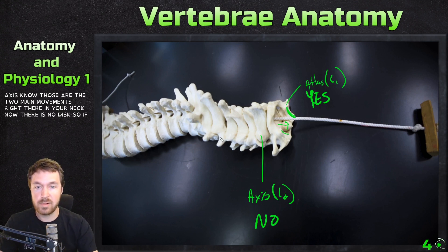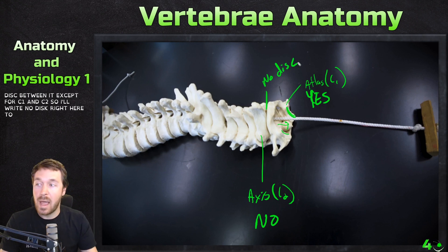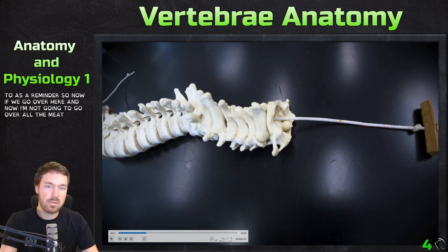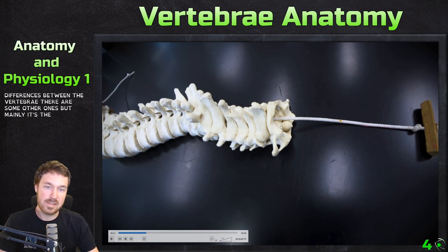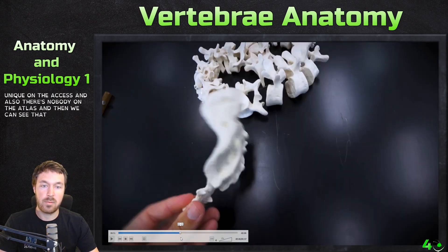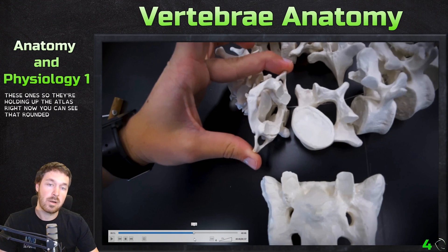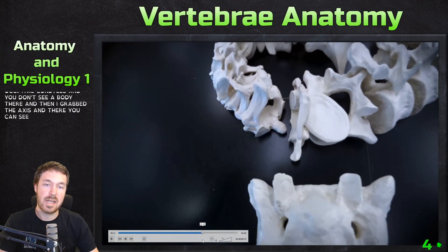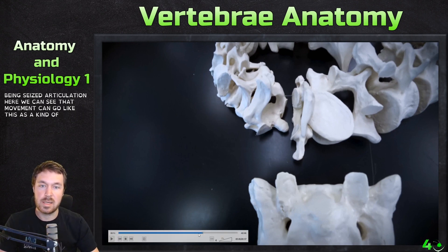Now there is no disc — every vertebrae has a disc between it except for C1 and C2, so no disc right there. C1 has no body, and that knob-like structure — the dens — is unique on the axis. Here I'm holding up the atlas — you can see that rounded articulation for the occipital condyles and you don't see a body there. Then I grabbed the axis and there you can see that dens, which is that knob that sticks up, and you can see this articulation where that rotation movement happens.